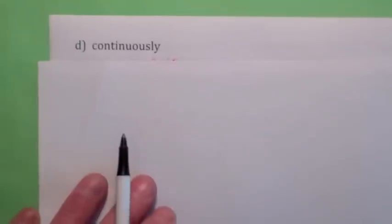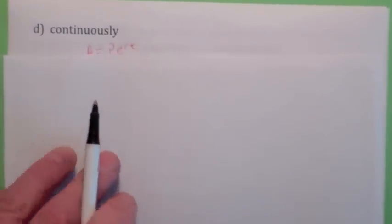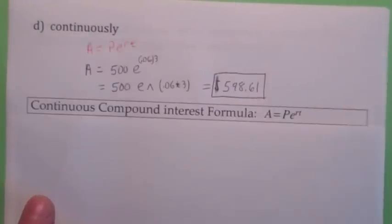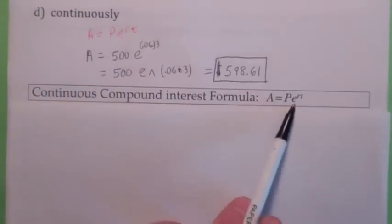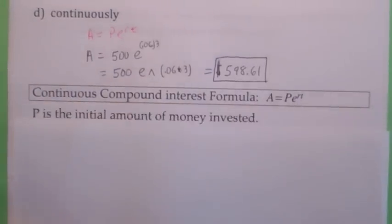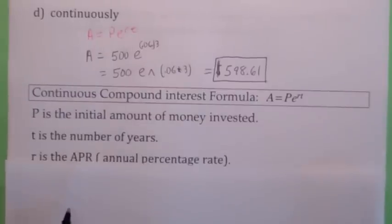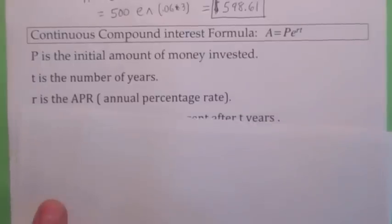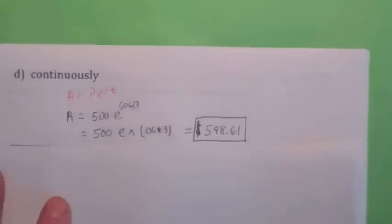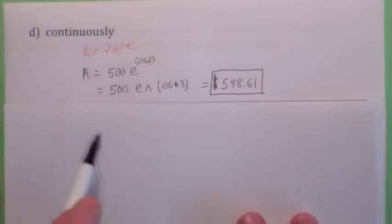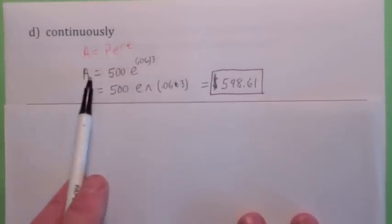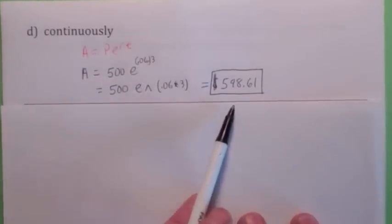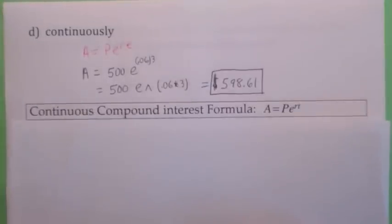Now we can also talk about compounding continuously from a mathematical point of view. That means you're literally compounding it every instant. And the formula becomes different. The formula becomes, you use this one, A equals P times E to the RT. Notice there's no N. P is the amount of principal, T is the number of years, R is the APR, and A is the amount of money after T years. But there's no N. So anyway, getting back to the problem, I guess N is infinity, right? But anyway, it actually makes the problem simpler. You plug in the APR here, so you get A equals 500 times E to the .06 times 3. Be careful with the parentheses. And you actually get one penny more, I believe, than if you compounded it daily. So there's different ways to compound the interest.